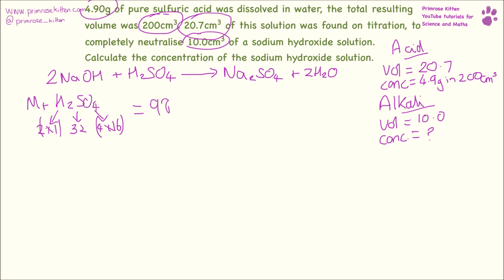To work out the concentration—and you need to remember these equations because they do not give them to you in the exam—mass over MR equals concentration. So we have 4.9, which is the number of grams from the question, divided by 98, which is the MR we've just worked out, gives us 0.05 moles. And remember that is not our concentration yet because that was in 200 centimeters cubed.